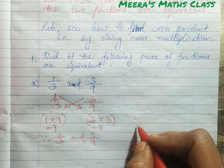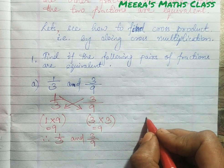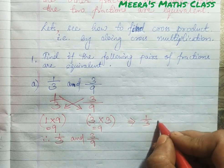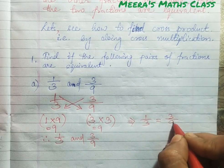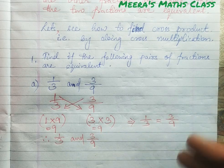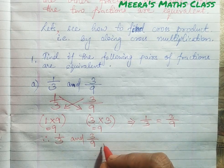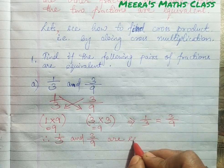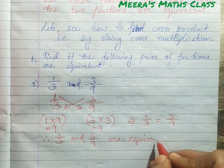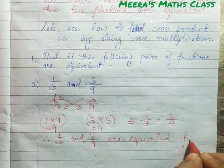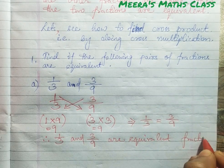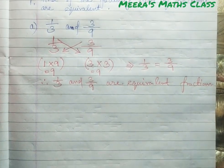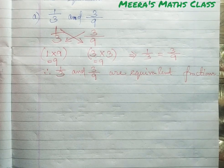Therefore you can write: since the two products are the same, 1/3 = 3/9. You can conclude that 1/3 and 3/9 are equivalent fractions. I will do one more example for you so that it becomes more clear.